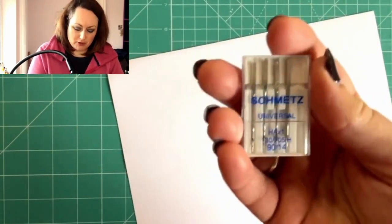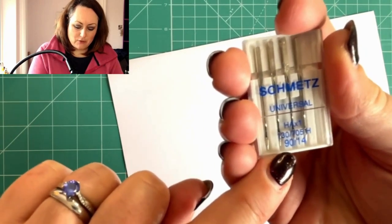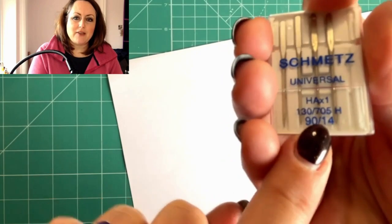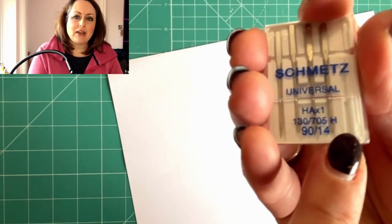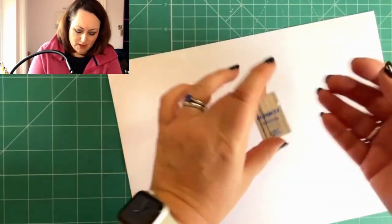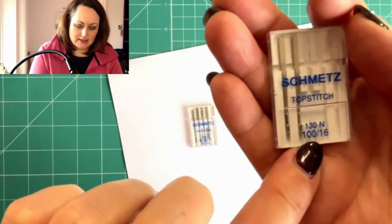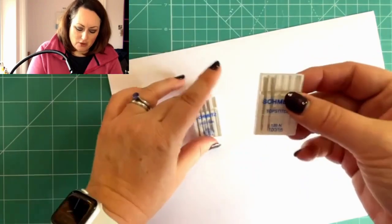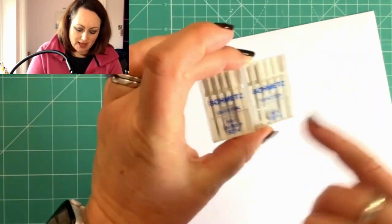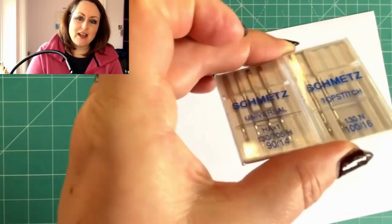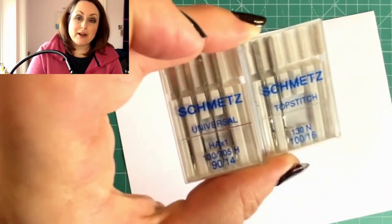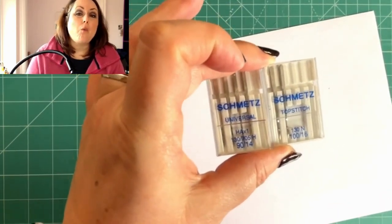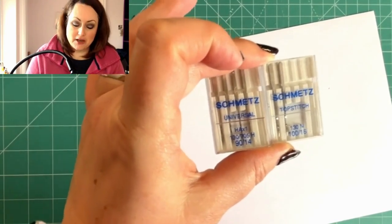When you buy your sewing machine needles, you will see on the bottom of all of them or on the packet, it will give you a number. There are two numbers there. This one says 90 and 14. This particular one is a topstitch needle and it says 100 slash 16. So all your sewing machine needles have a different sizing numbering system. So let's go through what they are and then why you would use each of the numbers.